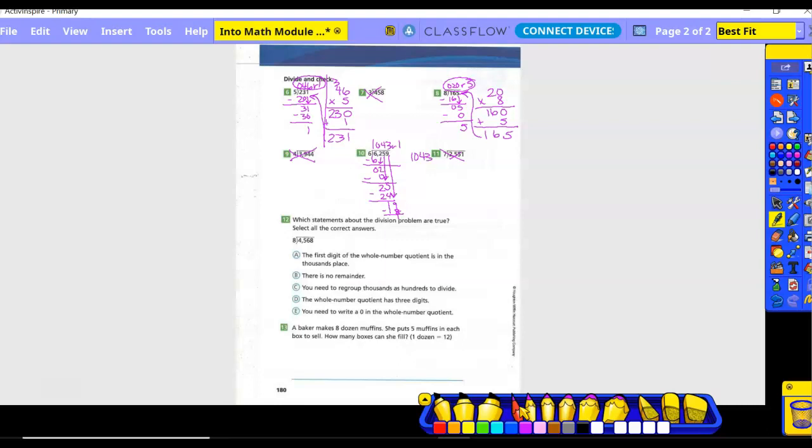To check it. 1043 times six. Six times three is 18. Carry the one. Six times four is 24. Plus one is 25. So put the five. Carry the two. Six times zero is zero plus two is two. Six times one is six. Okay. Now what do I need to do? Add my remainder. So nine, five, two, six. So 6,259 is my answer. So is 1043 remainder one correct? Yes. All right.